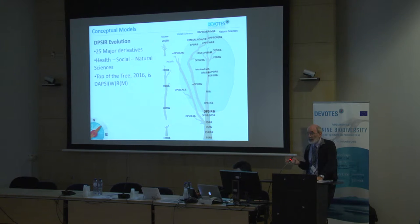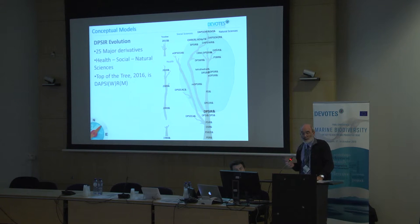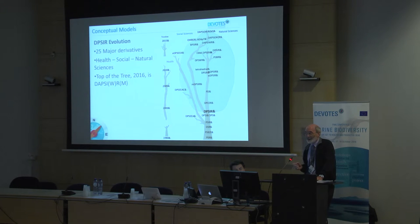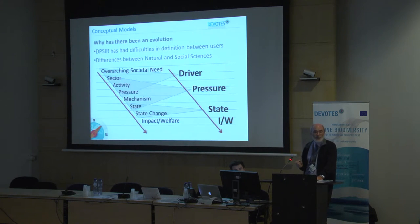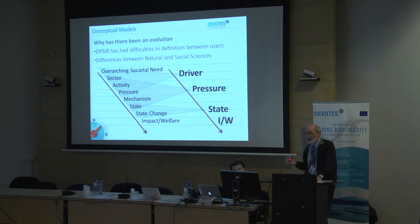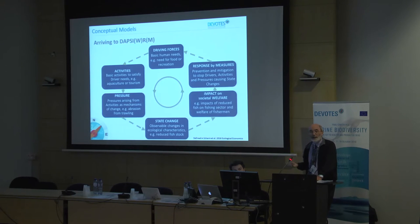On the DPSIR evolution, there have been 25 major derivatives — these are in health, but mostly in social and natural sciences. At the top of the tree, with Mike's publications in 2016, we come to DAPSL work. DPSIR has many difficulties in definitions between users; they use it in different ways, particularly between natural and social sciences. For example, a driver might be used as an overarching societal need, a sector activity, or a pressure. That inconsistency runs through all the categories, which is why we arrive at DAPSL, which clarifies the whole system.